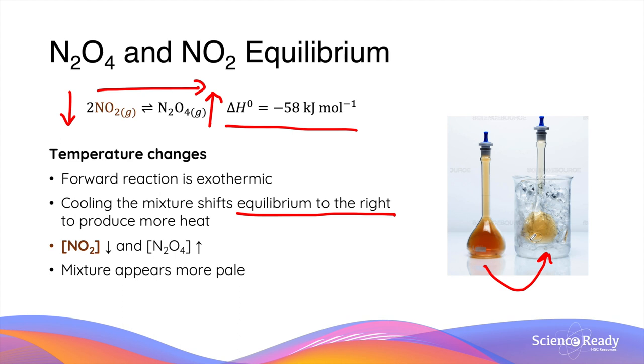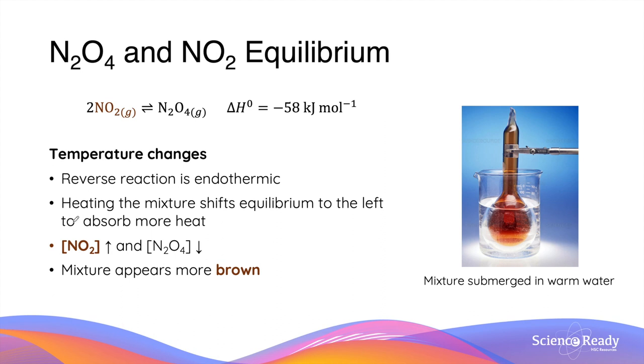Conversely, if we have an increase in temperature by heating the solution or mixture, this will favor the reverse reaction as it is endothermic. As the equilibrium moves to the left side, we have an increase in concentration of nitrogen dioxide and a decrease in concentration of N2O4. As a result, the mixture will appear more brown.